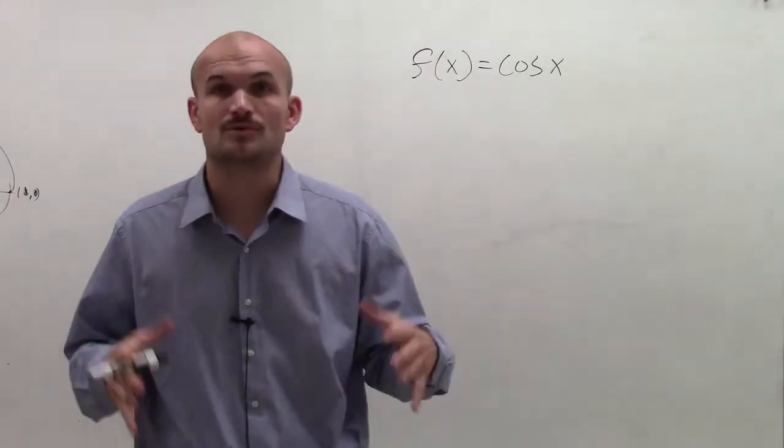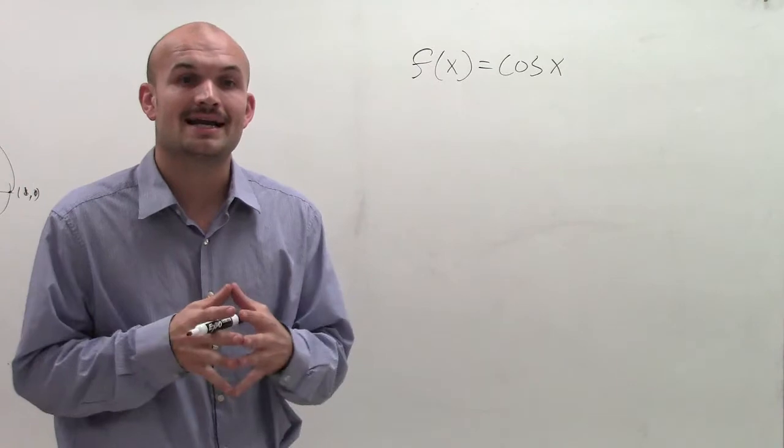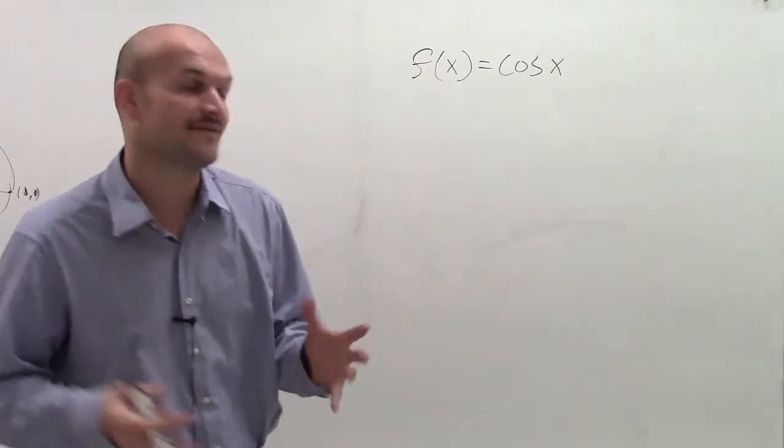So now let's talk about f(x) equals cosine of x. And what I want to do is I want to graph this on an x and y, or x and f(x) axis.